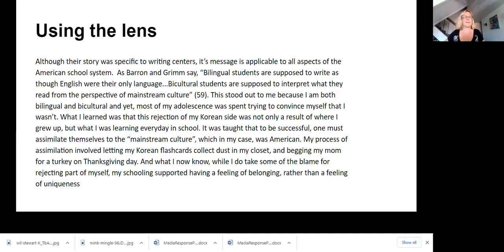As Barron and Grimm say, bilingual students are supposed to write as though English were their only language. Bicultural students are supposed to interpret what they read from the perspective of mainstream culture. And you'll notice that ellipsis there. An ellipsis is a fancy way of saying the dot, dot, dot. And Barron and Grimm talk about bi-dialectical, bilingual, and they talk about a lot of things which were not relevant to this student's story. And so this student deleted those. Didn't change the meaning. It just narrowed the focus. And this is the power of doing that in a quotation. The author doesn't have to worry about those ideas, can just focus on the part that's relevant. Again, the author has not changed Barron and Grimm's point. They've just cut the quote to make it relevant.